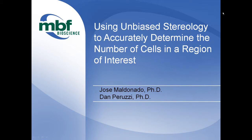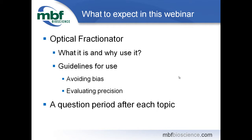Good morning and good afternoon. Welcome to our latest iteration of our continuing online educational series. Today we will be discussing the use of unbiased stereology to accurately determine the number of cells in a region of interest. My name is Jose Maldonado and with me today is staff scientist Dr. Dan Peruzzi. Over the course of the following 60 minutes we will be discussing the optical fractionator and the theory behind it — what it is and why you'd want to use it, some guidelines for its use, specifically focusing on avoiding bias and evaluating precision.